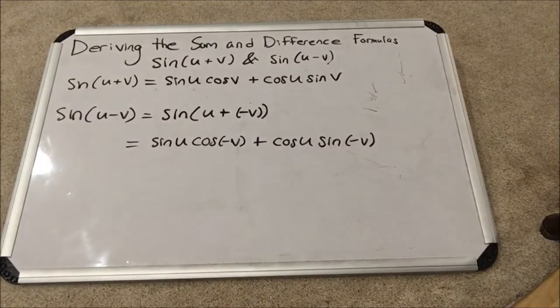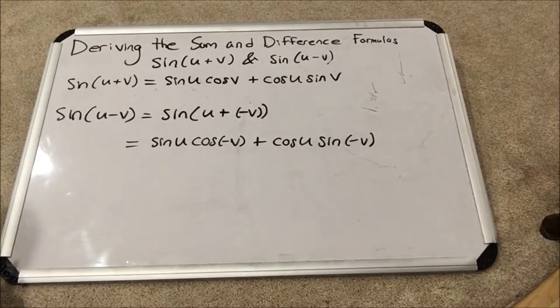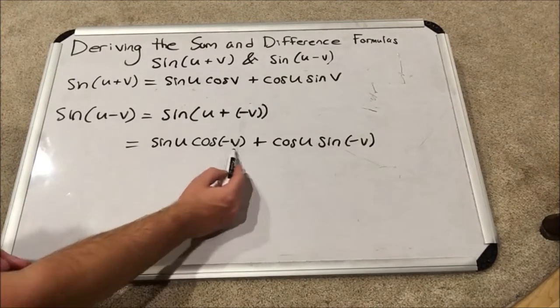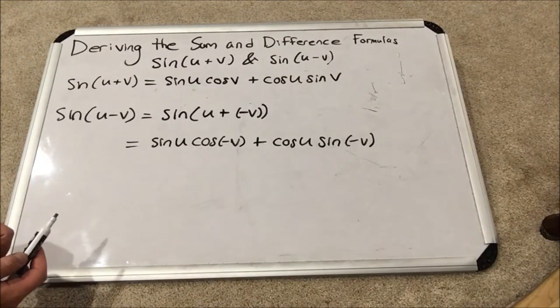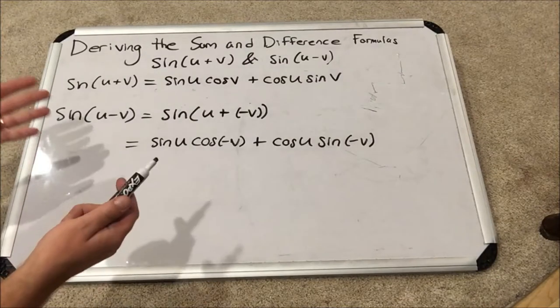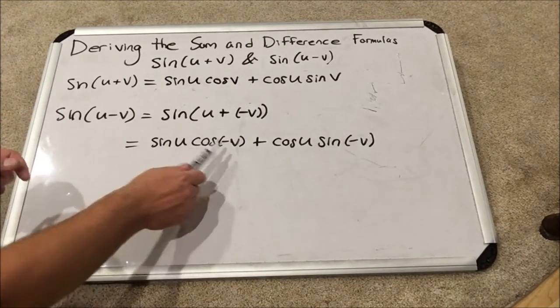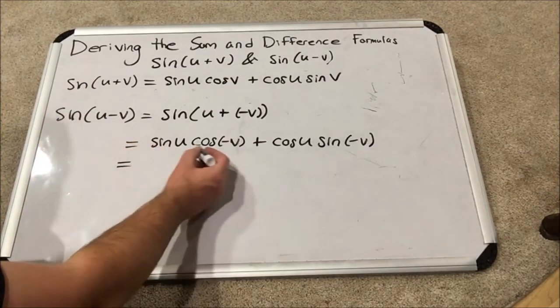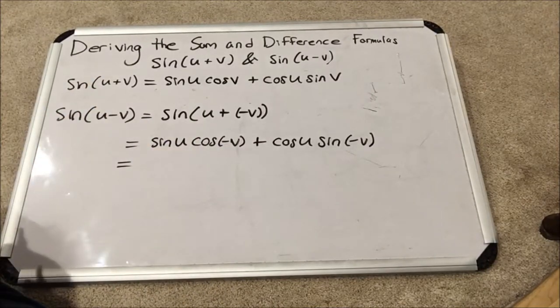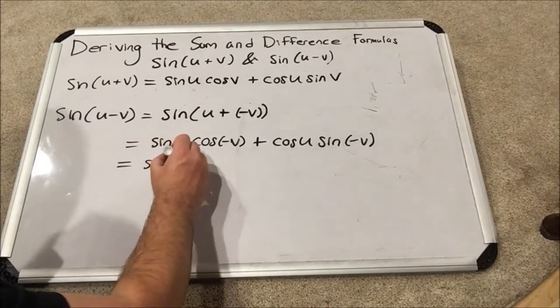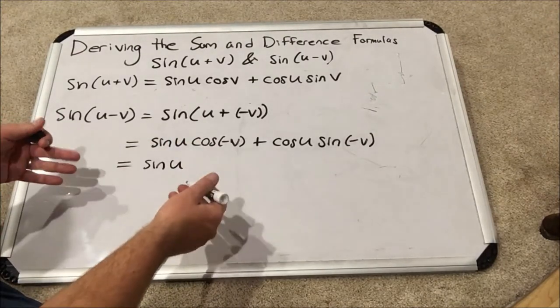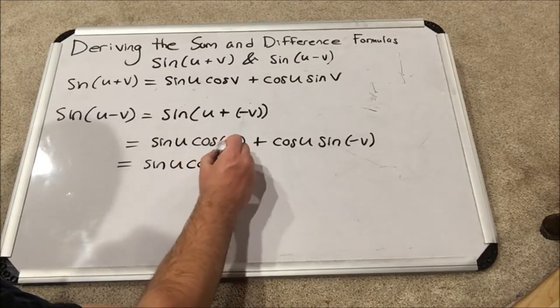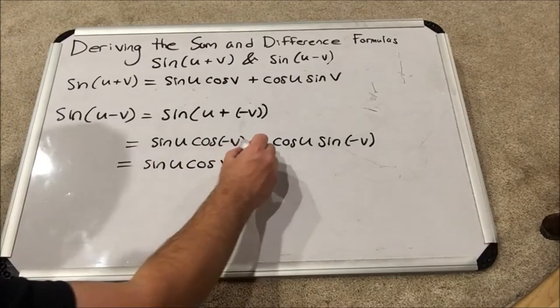As we did in part one, we will need to utilize even and odd function behaviors. Cosine is even. So, if I plug in the negative of some value, what will happen is that the original value, when it wasn't negative, will be popped out. So that means that cosine of negative V equals cosine V. It's almost as if with even functions, you didn't plug in the negative, you get the same result as if you plugged in a positive. So, this is just sine U cosine V.